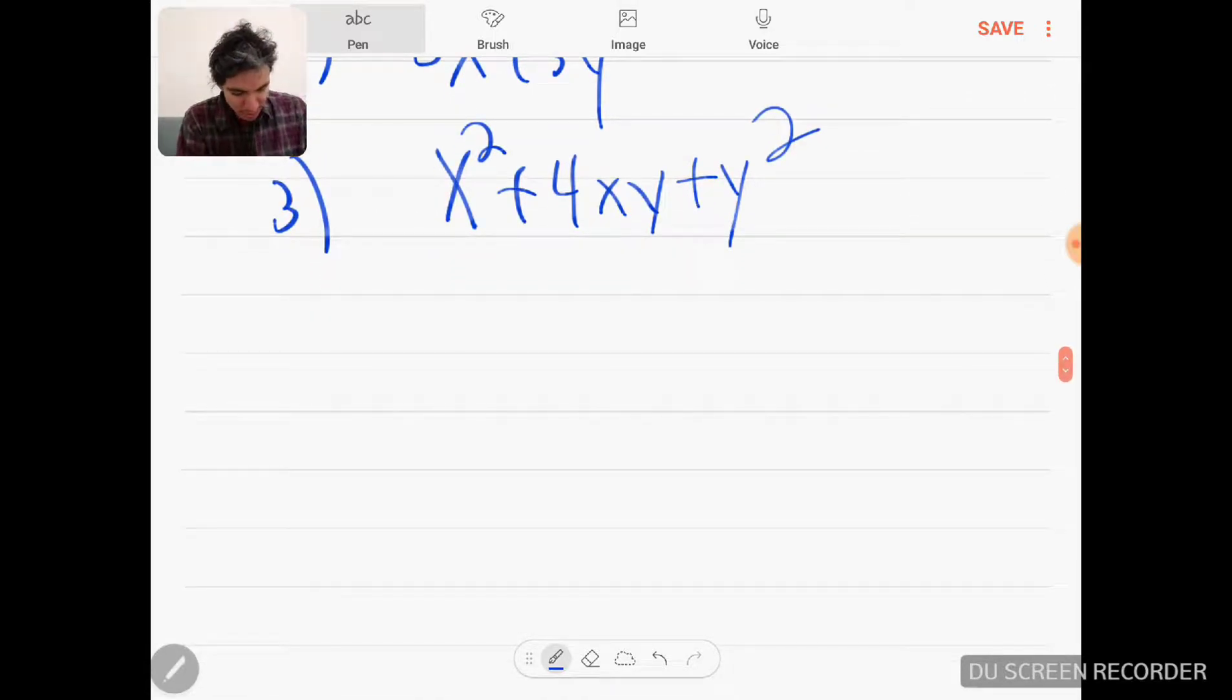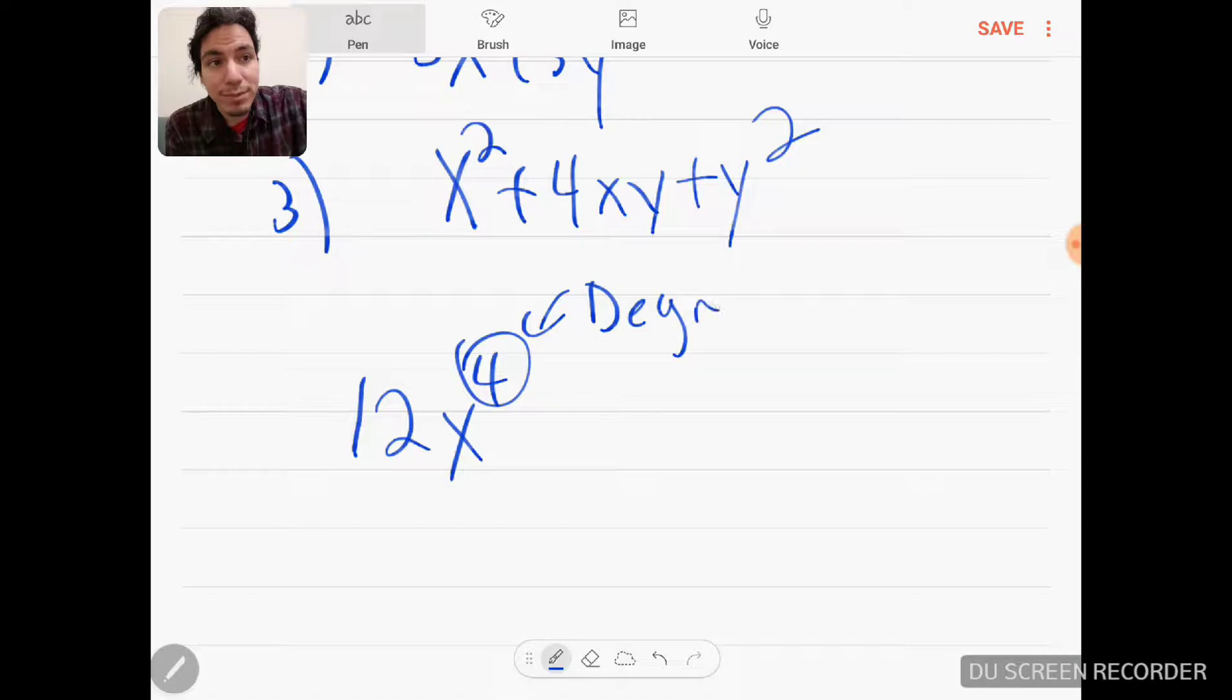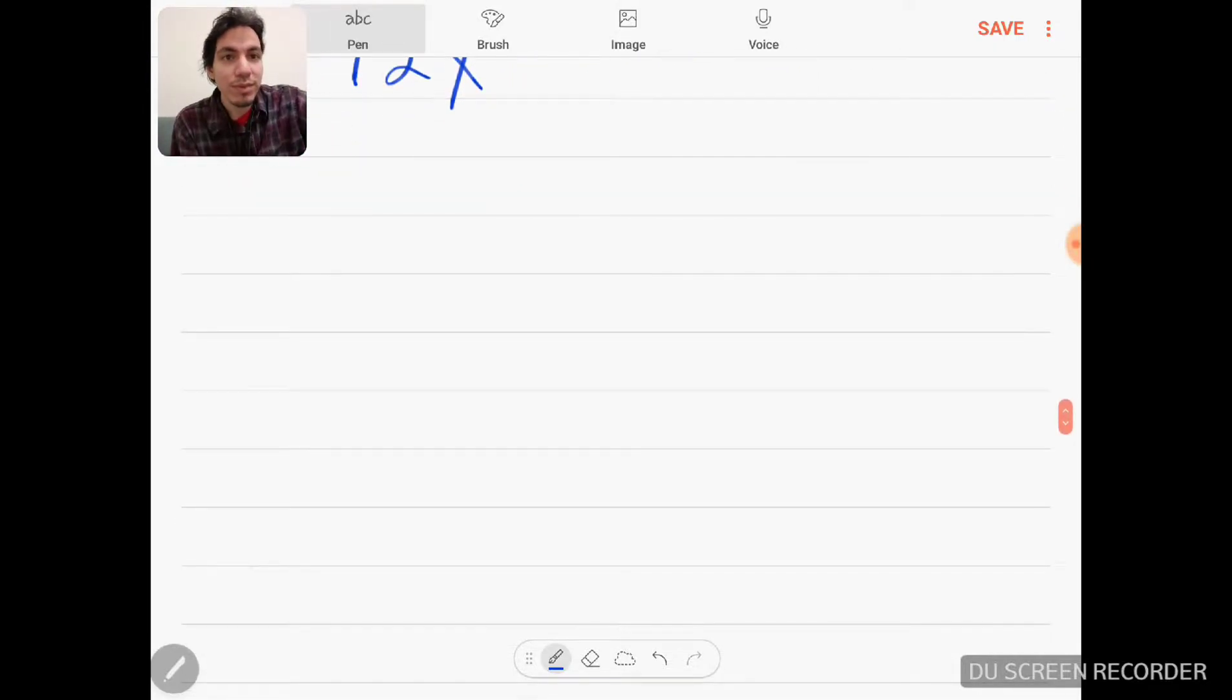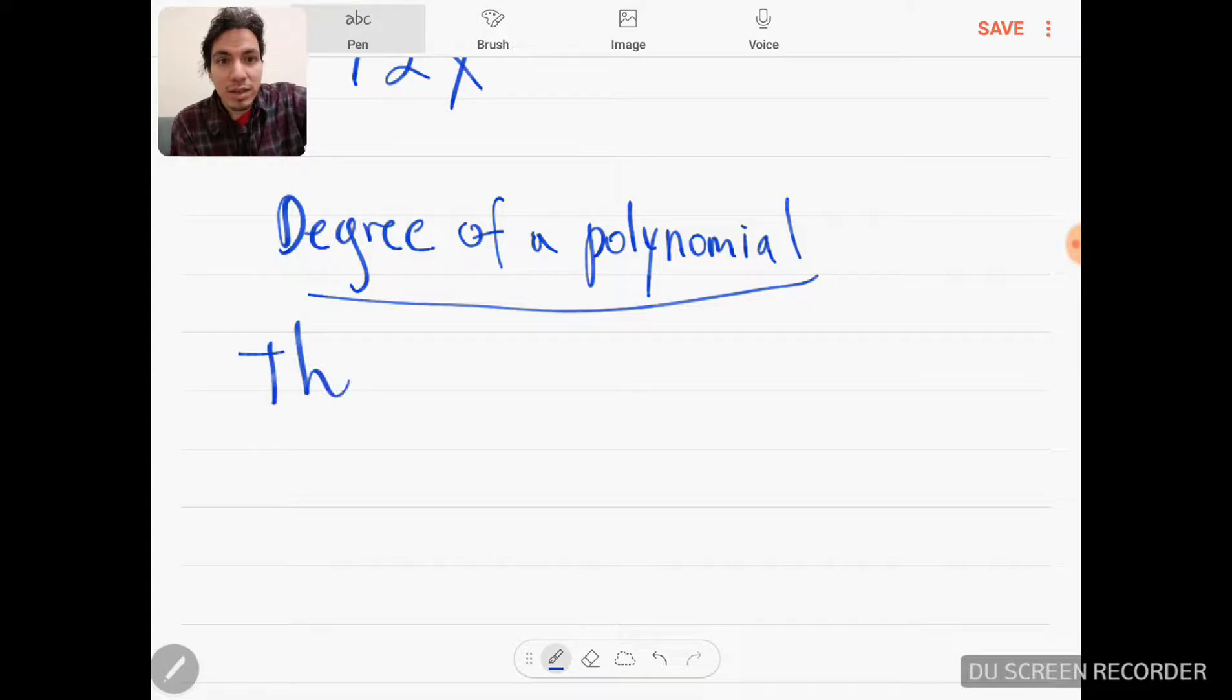And as I was saying before, remember that there's a number on top for the exponent. This is generally in the world of polynomials referred to as a degree. What is the degree? The degree of a polynomial is the greatest degree of any term of the polynomial.